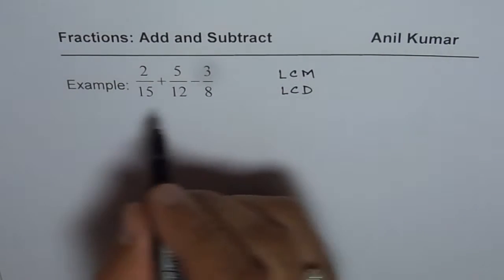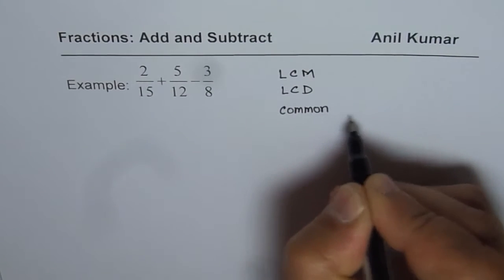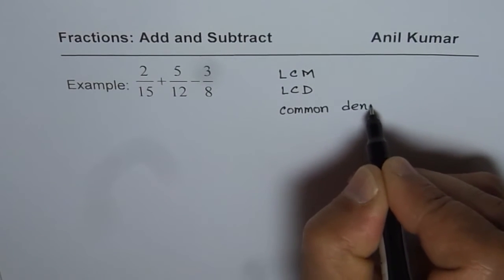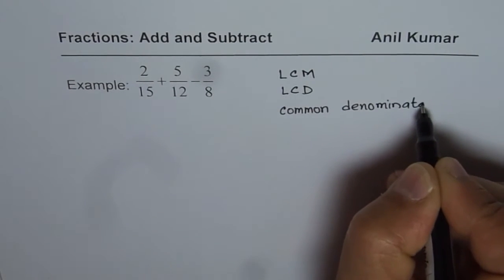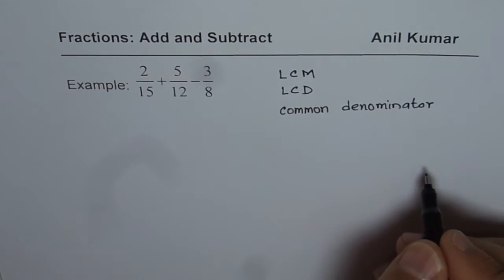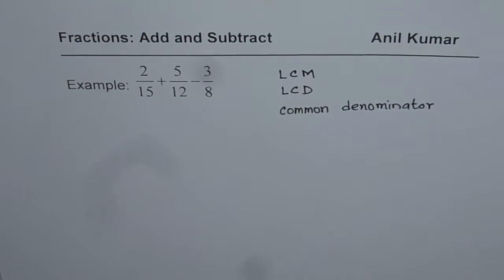Once we have common denominator, the idea is to have common denominator. Then we can add and subtract fractions. Now, how to find common denominator? That's the next question.